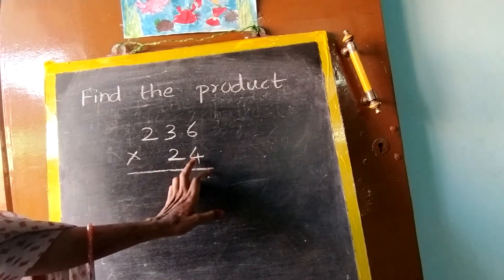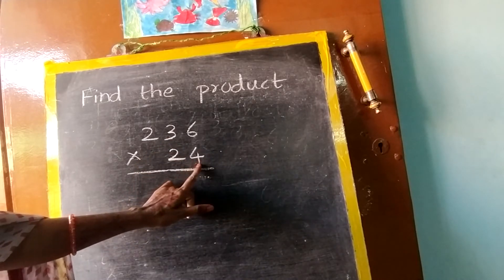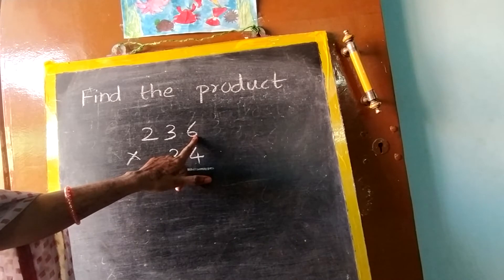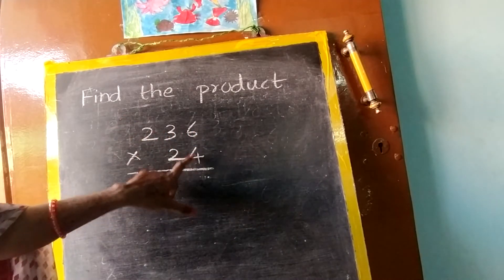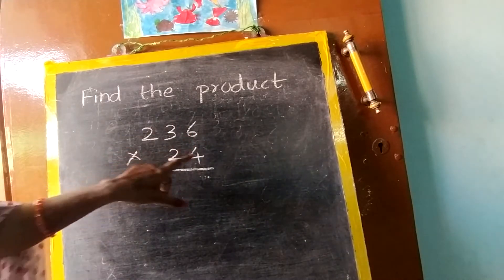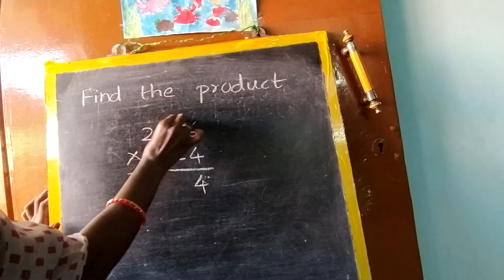First thing, see only the first number ones place 4. So forget this 2, only we are going to start with 4. You have to go in this order: 1, 10, 100 only. So first 4 into 6, 4, 6 are 24. So 4 here, 2 carry.